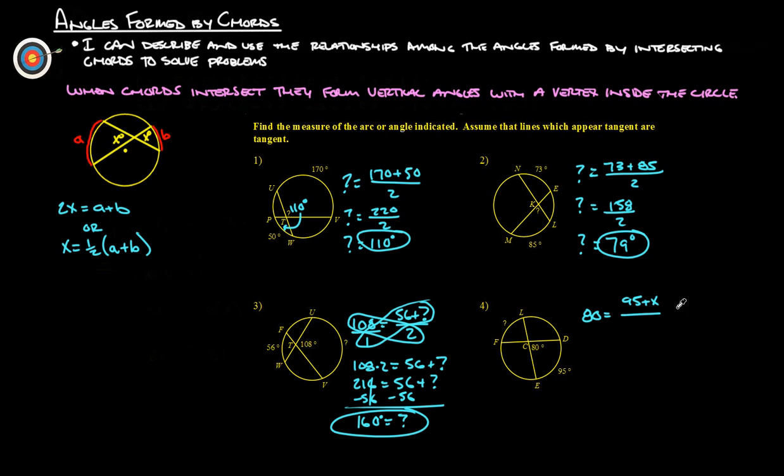Let's do question mark divided by 2. So same thing, cross products, and away we go. So 80 times 2 has to equal 95 plus question mark. So 80 times 2 is 160, right?